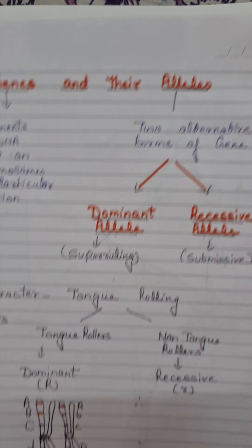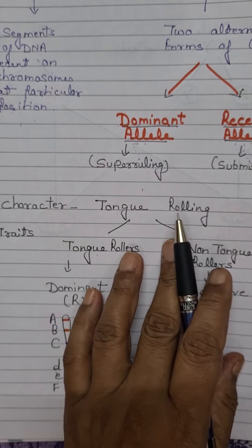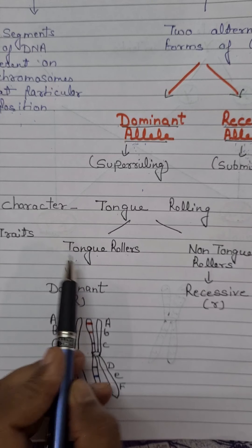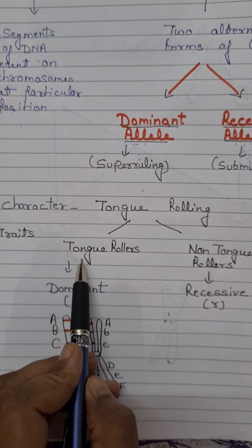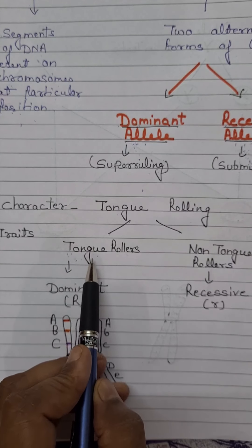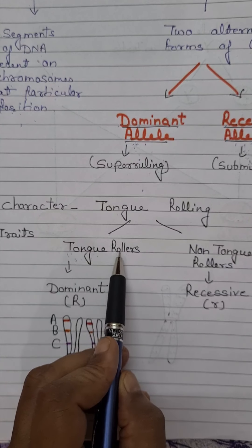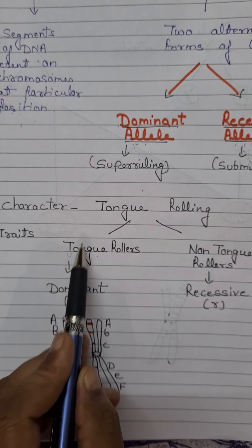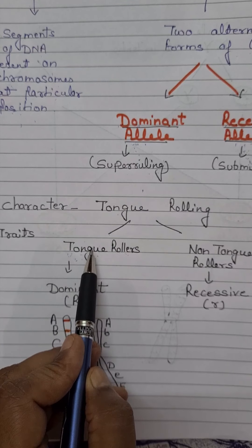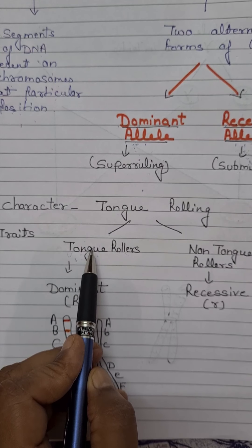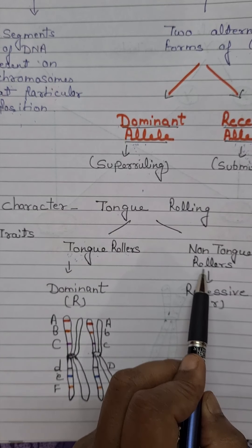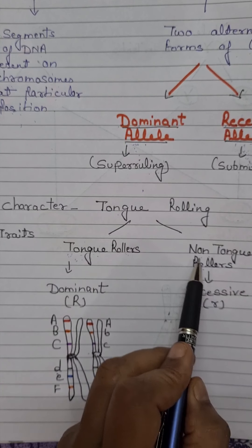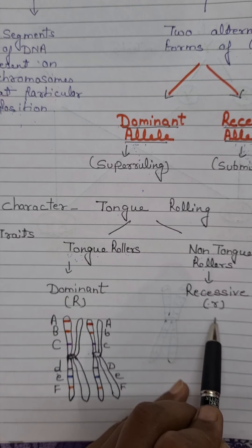For the character of tongue rolling, there are two possibilities: some are tongue rollers — that is the dominating trait — and most of us are able to roll our tongue. This is controlled by the dominant allele. Few are non-tongue rollers, as the allele controlling this trait is a recessive allele.